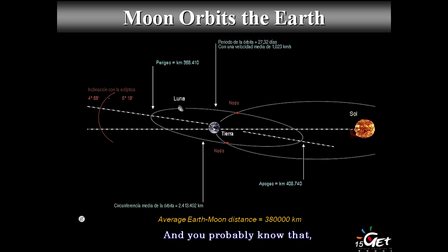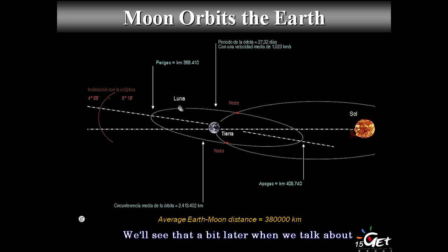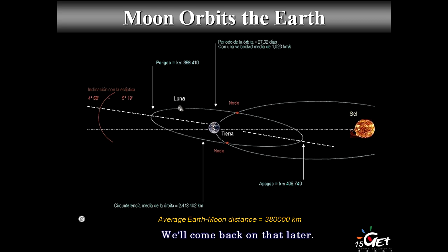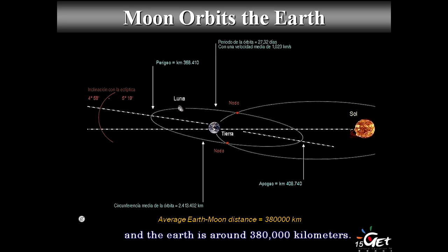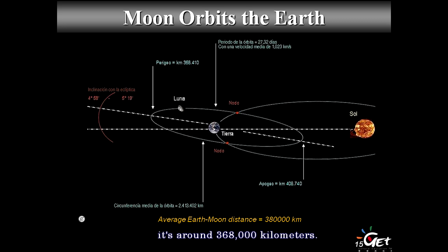Now let's talk about months. Months are based on the orbit of the Moon around the Earth. Here we have the Sun, the Earth, and the Moon orbiting around the Earth. The Moon is not in exactly the same plane as Earth's orbit around the Sun — we'll come back to that. The average Earth-Moon distance is about 380,000 km. The orbit is slightly elliptical: at apogee it's about 406,000 km, and at perigee about 368,000 km.